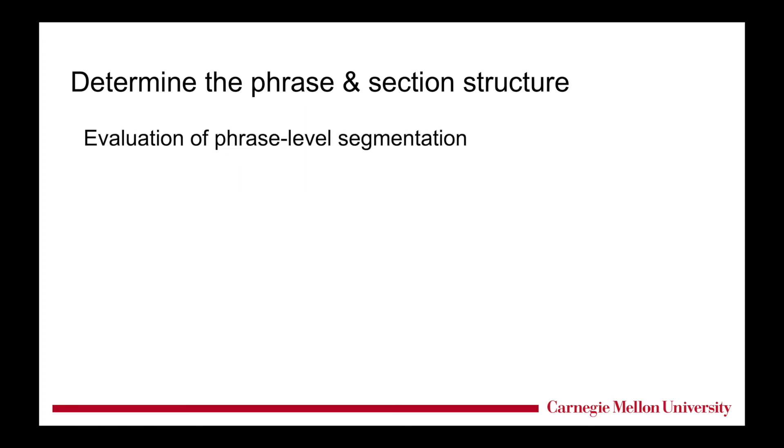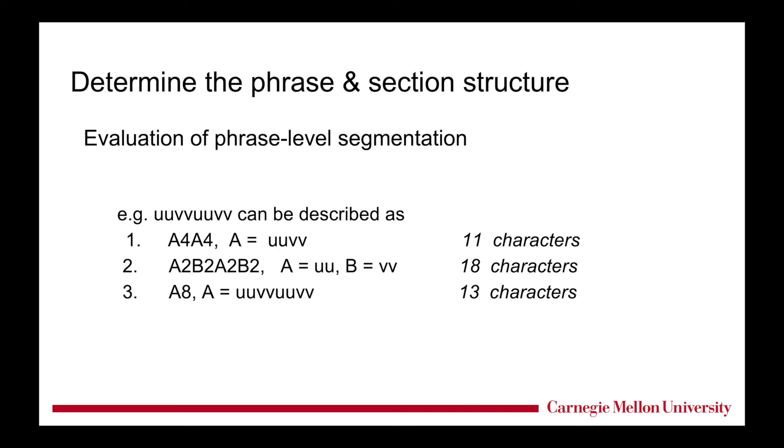Next problem is how do we evaluate a phrase-level structure? Is it the optimal or not? There is much ambiguity here. For example, suppose we want to analyze a sequence of eight measures. Use u and v to represent these measures, and we can describe the repetition as A4A4, where A is UUVV, or A2B2A2B2, where A is UU, B is VV. Or we can even do A8, where A is the entire piece. But some descriptions are simpler than others.